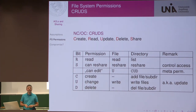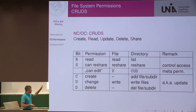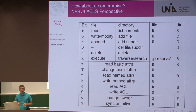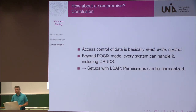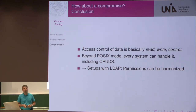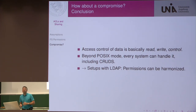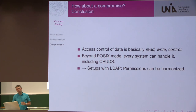Nextcloud has these CRUD permissions, and that is what we derived from this. For files, it is reduced to three permissions basically; for directories you have all five of them, and we think you can do all this also with ACLs. With 14 permissions you can project it down, and if you look at it from the other way around, you can also do it from CRUD to NFS. Access control, I think, is typically read, write, and control — perhaps with upload in the context of cloud sharing. Beyond POSIX mode and POSIX ACLs, every system can handle it, including CRUD. In setups where you have a central directory service, you can harmonize everything and have a transparent access control.